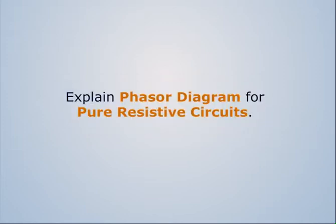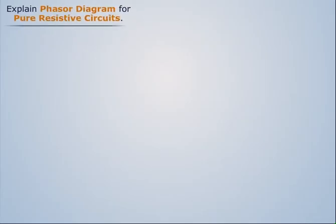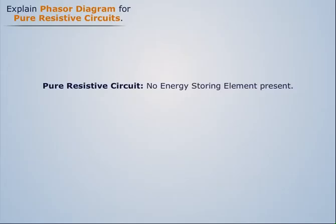Explain Phasor Diagram for Pure Resistive Circuits. A pure resistive circuit is a circuit in which no energy storing element is present.